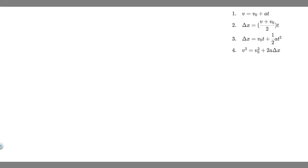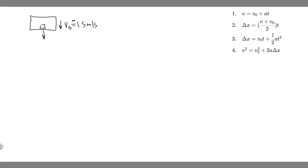For parts a and b, we have this helicopter — I'll draw a box — and we know it's descending, traveling downward at 1.5 m/s. The initial velocity is -1.5 meters per second because we define up as positive and down as negative. There's a mailbag in it that will drop, and after two seconds we're trying to find the speed v and the distance delta y it travels.